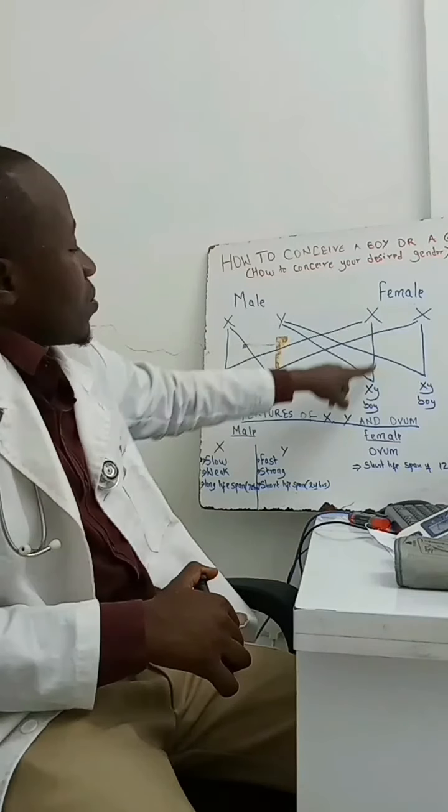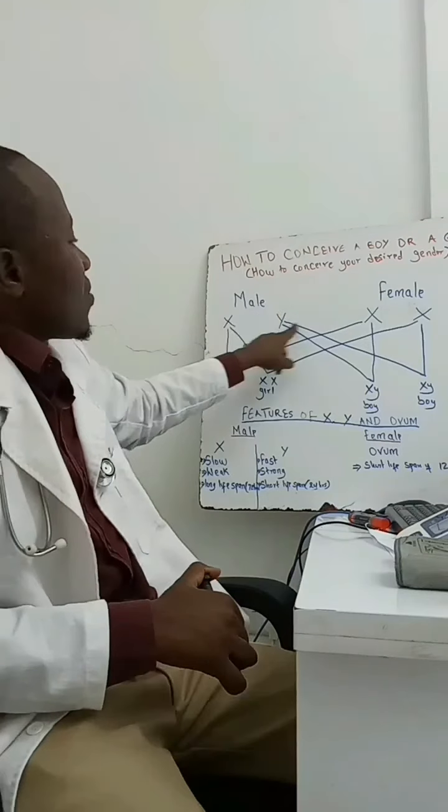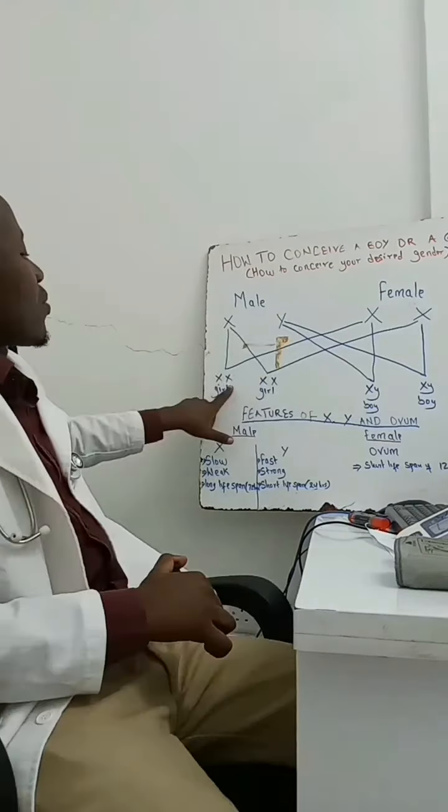When Y fuses with X chromosome, there will be a boy. So probability of getting a boy is 50%. Probability of getting a girl is also 50%.